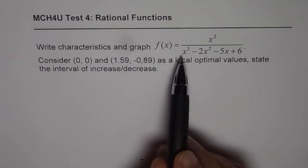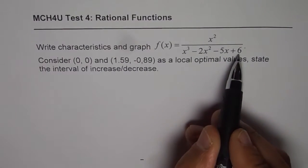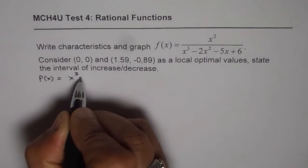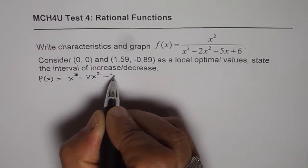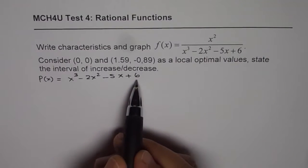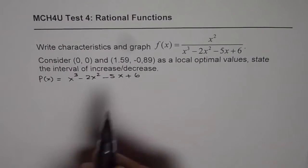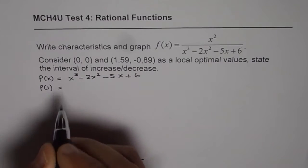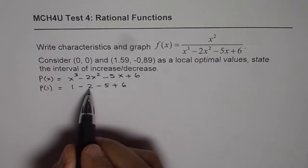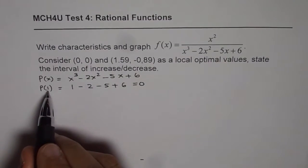To graph this function, let us analyze the denominator: x³ minus 2x² minus 5x plus 6. Let's call it a polynomial p(x). To factor it, we can try numbers which are factors of 6: ±1, ±2, ±3, and ±6. Let's check p(1): substituting 1 gives 1 minus 2 minus 5 plus 6, which equals 0. So 1 is a factor.